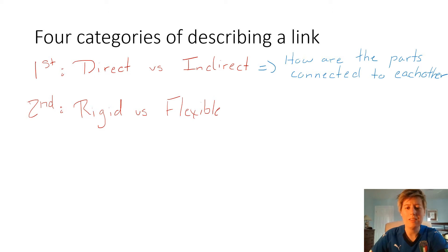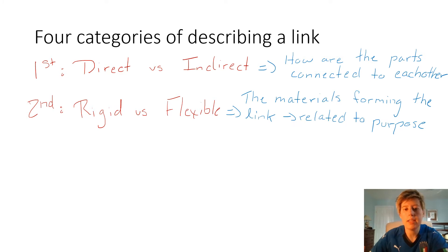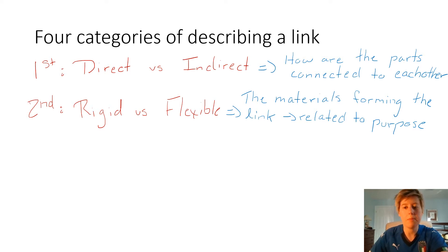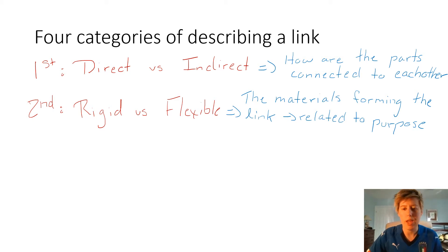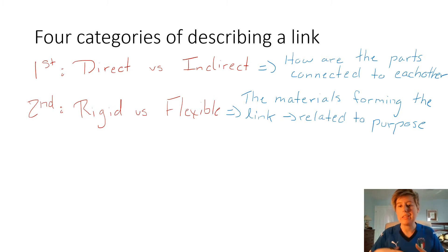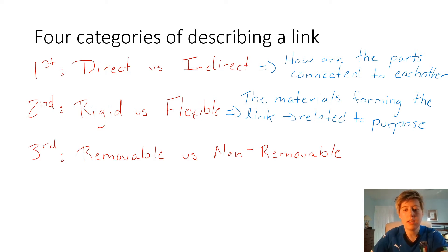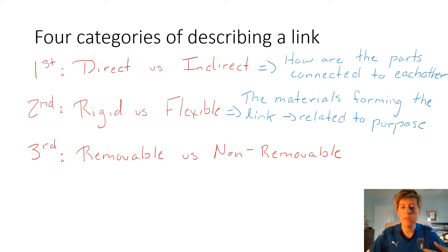The second category for describing a link is whether the link is rigid versus flexible. This is really talking about the materials that form the link. What's important to understand is that the materials forming the link are also related to the purpose. For instance, if we were talking about a mechanical pencil and one of its linking components is a spring — the whole purpose being to push the end for lead to come out — that's why we might use a spring compared to something else.